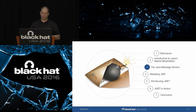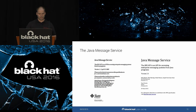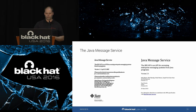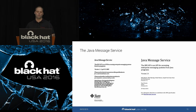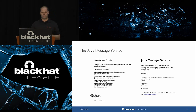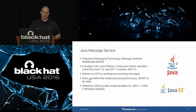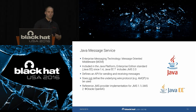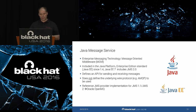Now we'll talk about the Java Message Service. JMS is one of the core technologies in the Java world. As Oracle or Sun writes: 'The JMS API is an API for accessing enterprise messaging systems from Java programs.' The first widely adopted version was 1.1, released in 2002. The newest released version is 2.0. JMS is included in the Java Platform Enterprise Edition since version 1.4 (from 2003), and the latest Java EE version 7 includes JMS 2.0.